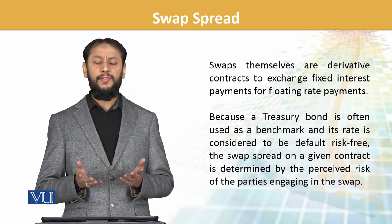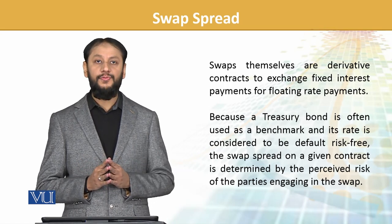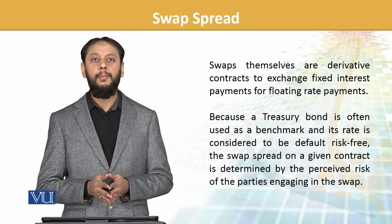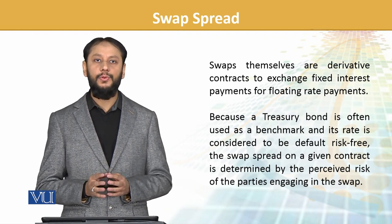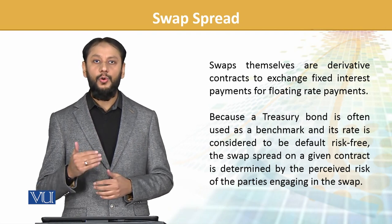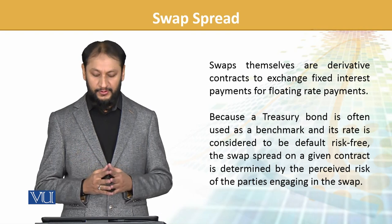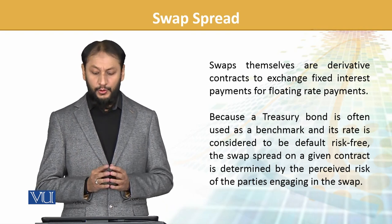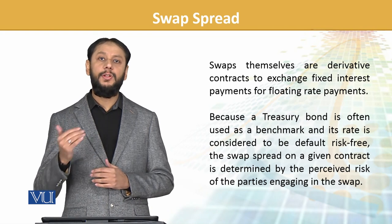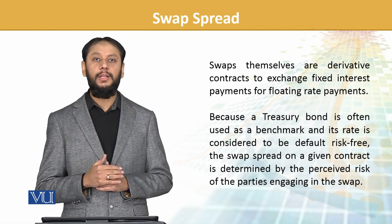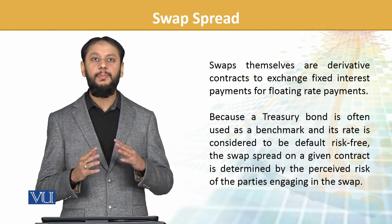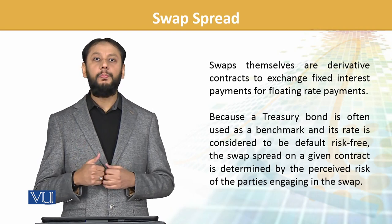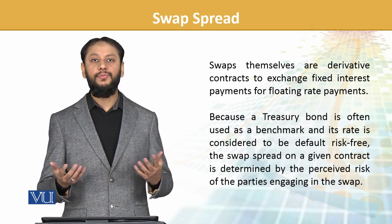Swaps themselves are derivatives contracts to exchange fixed rate payments — interest rate payments. We have talked about settlement and how the spread applies. Treasury bond is often used as a benchmark. US Treasury is considered a base rate and it is perceived as risk-free.